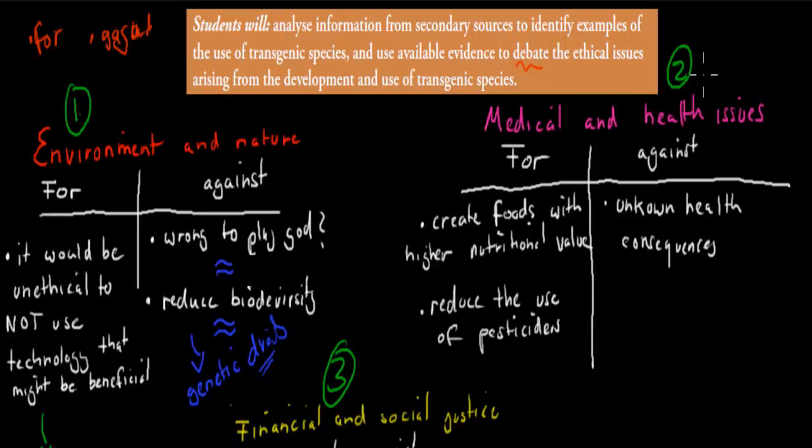Another one is medical and health issues. And these are probably always good ones to write about, because you can always make arguments for and against. For is that we can create foods with higher nutritional value. So at the moment, for example, if we were to grow wheat, we know that there are a certain amount of vitamins in it, we know there are certain amounts of minerals in it, and we know the overall nutritional value, but if we can make transgenic species, we can actually make these with higher nutritional values. We can put more vitamins into it, put more minerals into it, and thereby make it healthier. So that's obviously for health issues, that's something for it. Now we can make them, and we can make them better than they were beforehand.